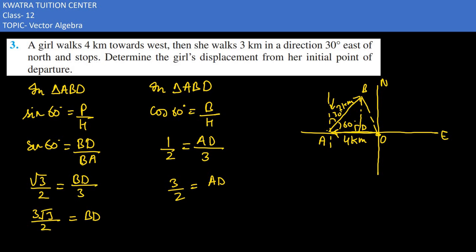So now what we need to find is OD. OD can also be found. Total distance OA is 4 km, and if 3 by 2 goes from 4 km, how much is left? What value will come? OD is equal to OA minus AD. OA is 4, AD is 3 by 2. So your value becomes 8 minus 3 divided by 2, which is 5 by 2.